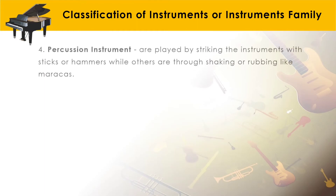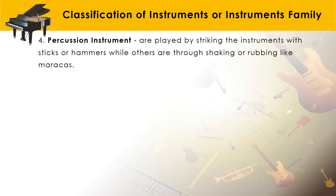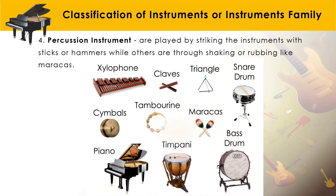The last family is percussion instruments. They are played by striking the instruments with sticks or hammers, while others are played through shaking or rubbing, like the maraca. Examples of percussion instruments include the xylophone, claves, triangle, snare drum, cymbals, tambourine, maraca, piano, timpani, and the bass drum.